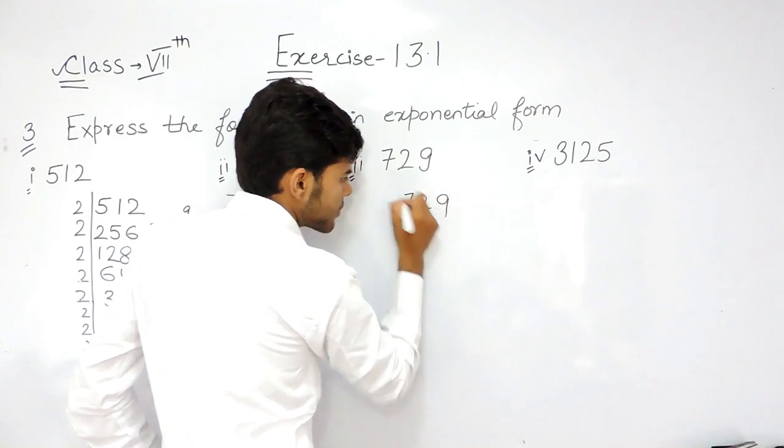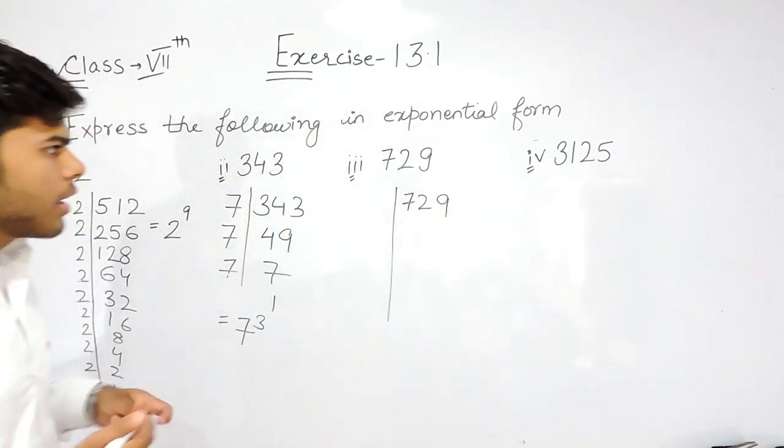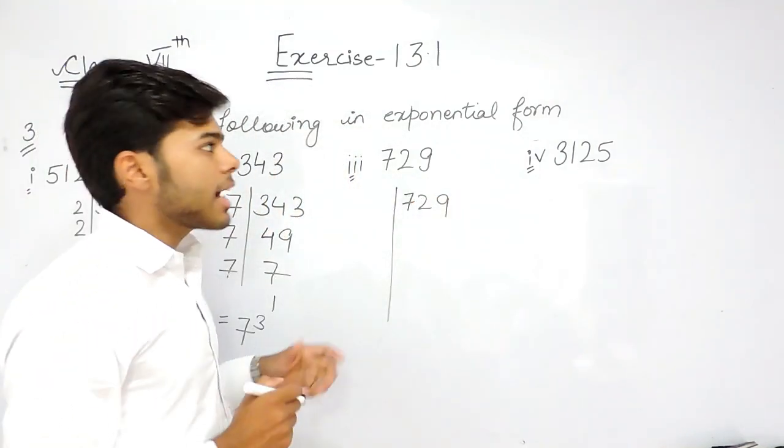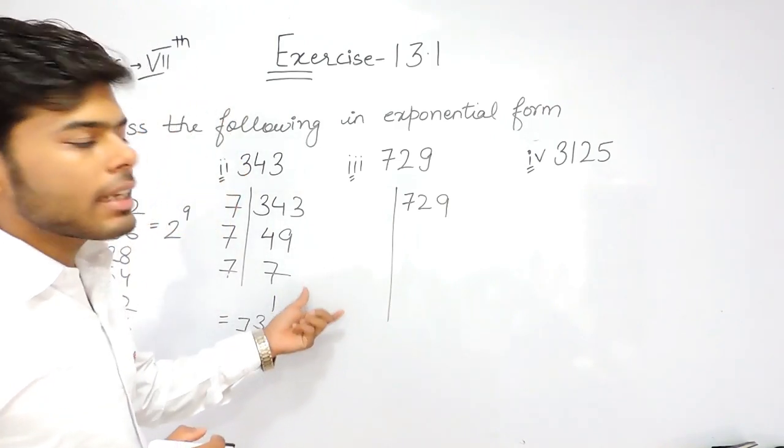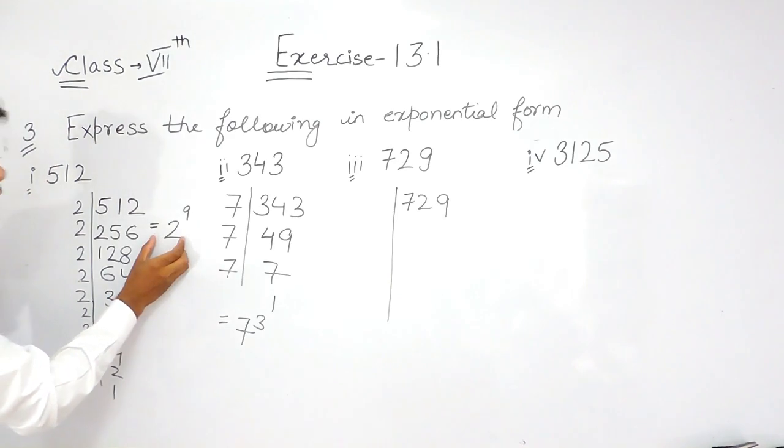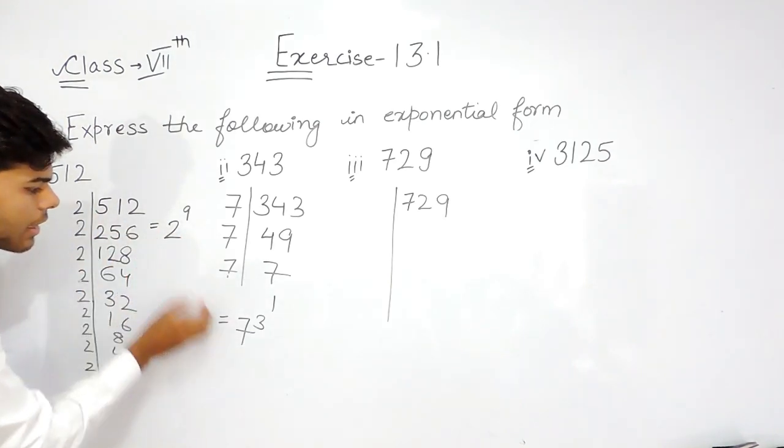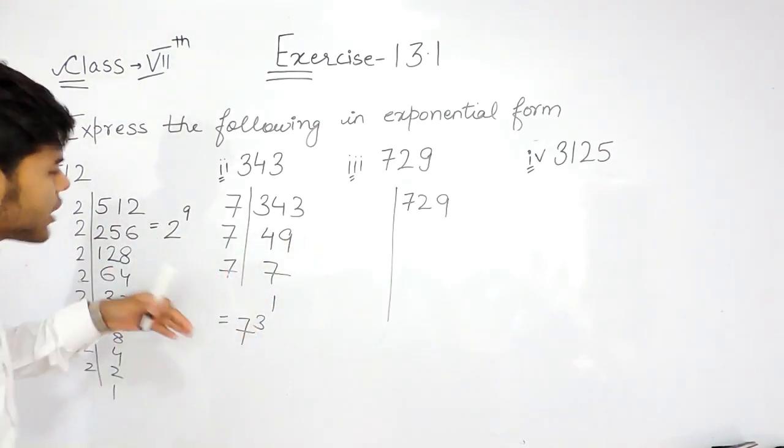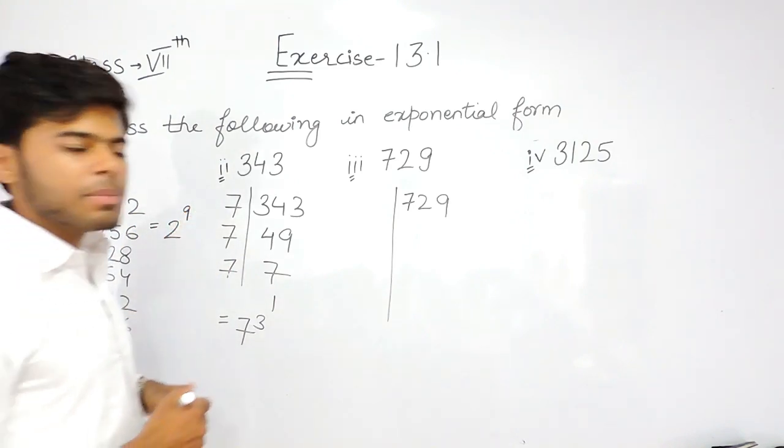Now, you should know that in exponential form, whenever we write a number, we write it in prime factorization form. This means these are the prime factors of the number raised to the power that has been given to us.